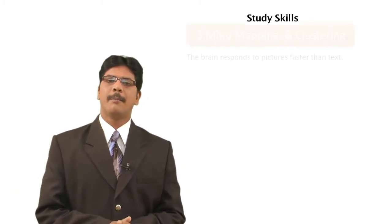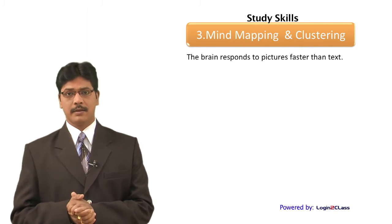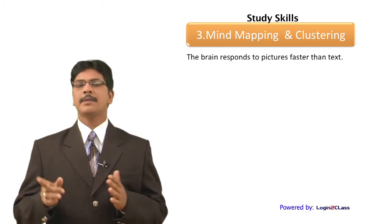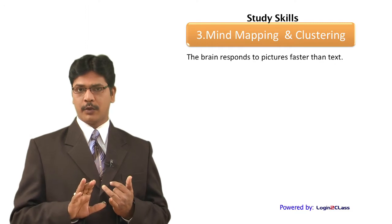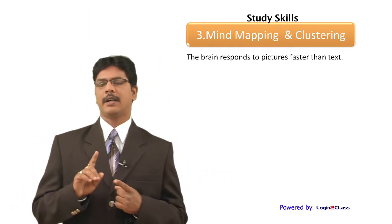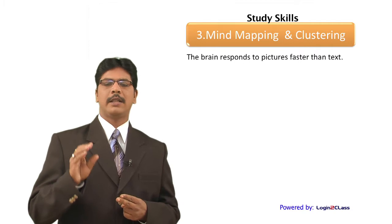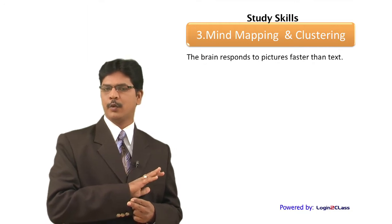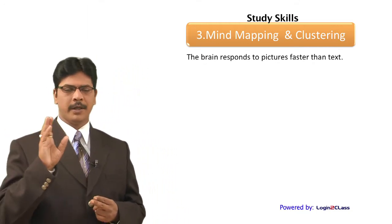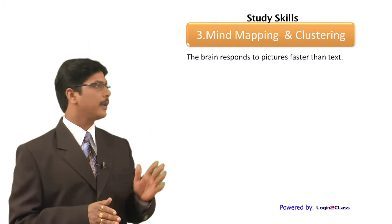We will see the third technique in our study skills, and that is mind mapping. This is a very powerful study skill, but mind mapping can be done only for subjects like languages and social studies as of now. Even the first technique, the Cornell note-taking formula, can only be applied for languages and social studies, not for mathematics at all. Math has nothing to do with memory; math is purely based on logic. So now we will learn this next technique called mind mapping and clustering.